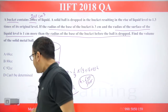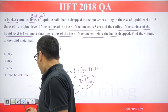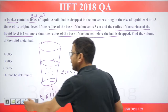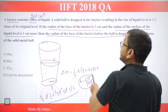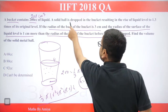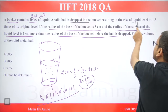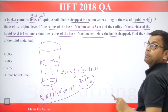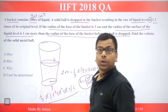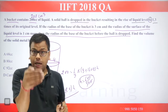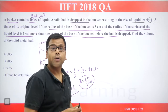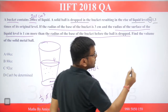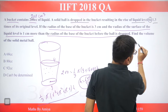Now, from the first part of the data we have removed this value. Let's go to the next part. When the ball is dropped, the liquid level raises by 1.3 — here you can see the value is 1.3. So the total height becomes h + 1.3. By the Thales theorem and similarity, you need to know one thing.